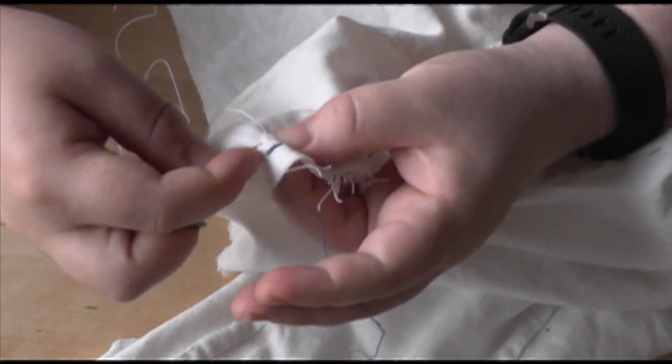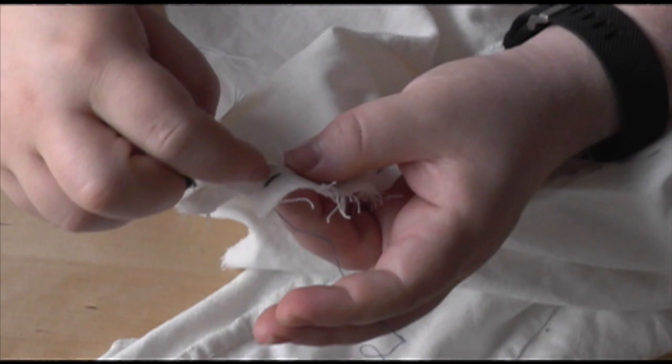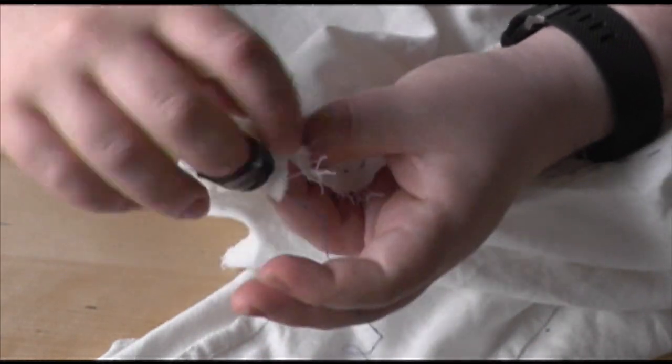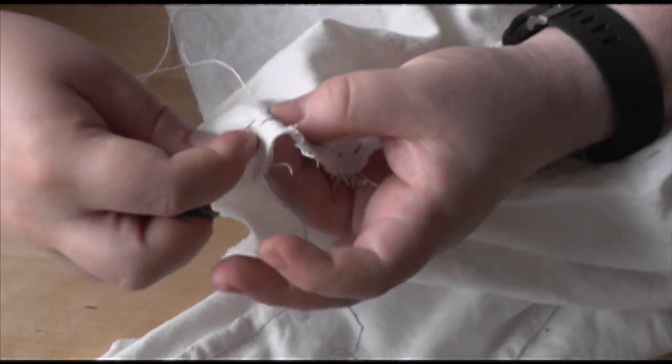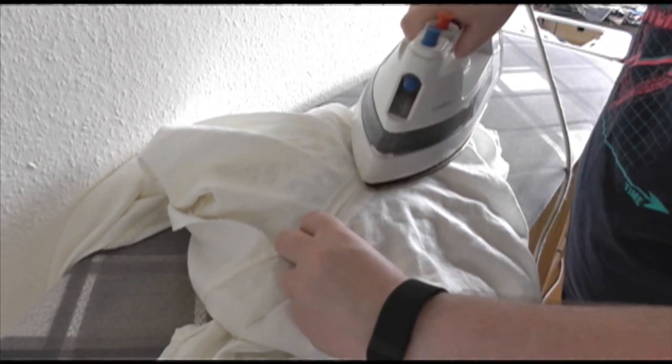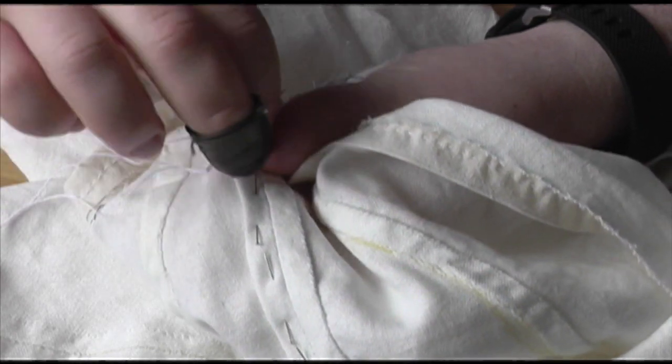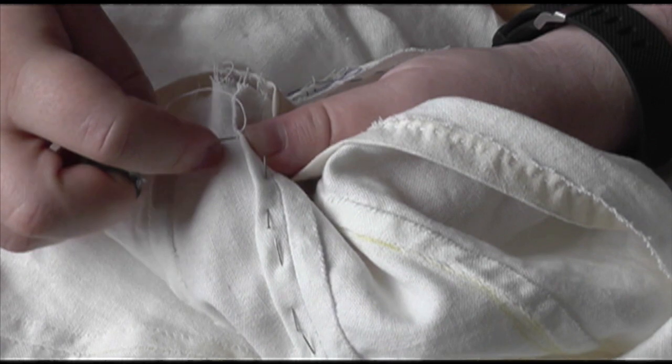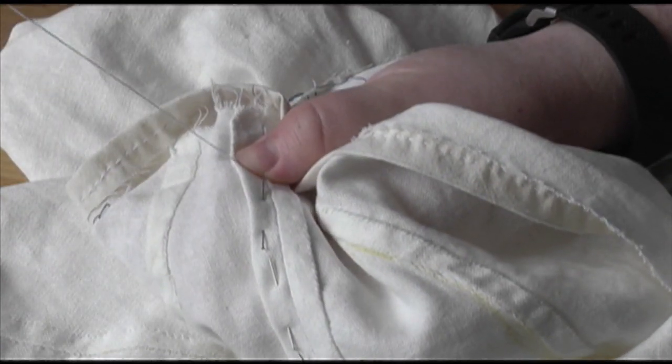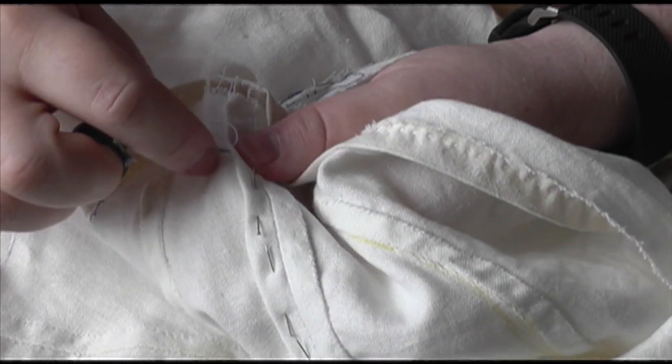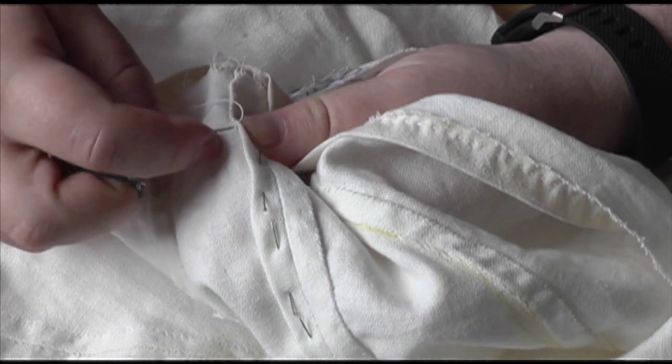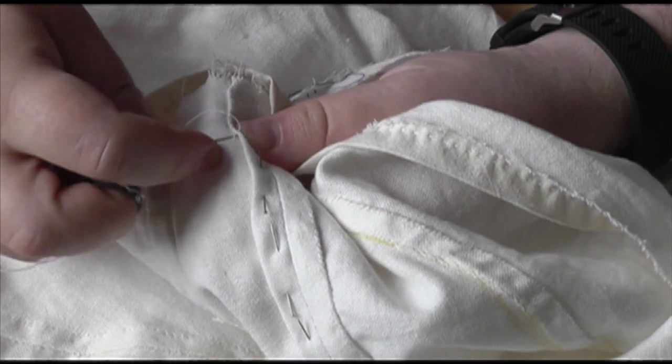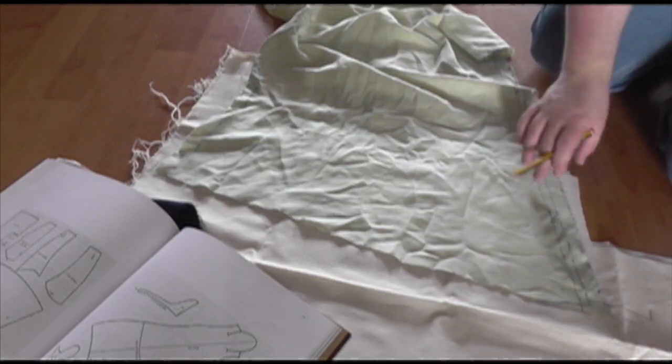This was sewn with another backstitch from the back, to what on a modern pair of trousers would be the fly, and pressed open, along with the seam allowance on the opening. Because of the opening, I felled each side of this seam individually, so that once the waistband was in, I would be able to carry on over the top of it.